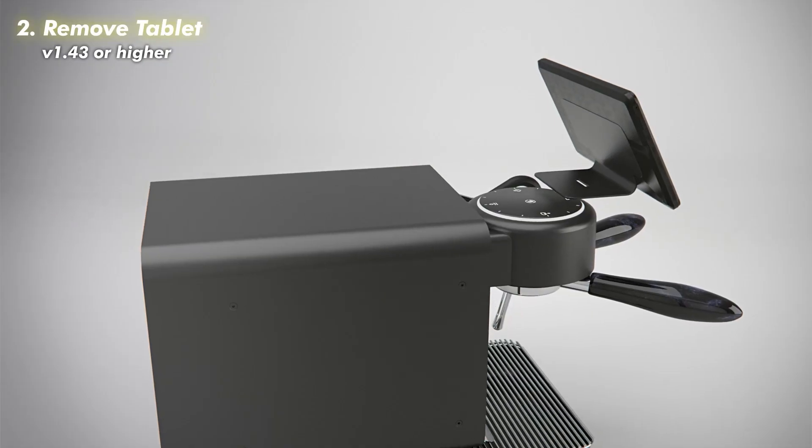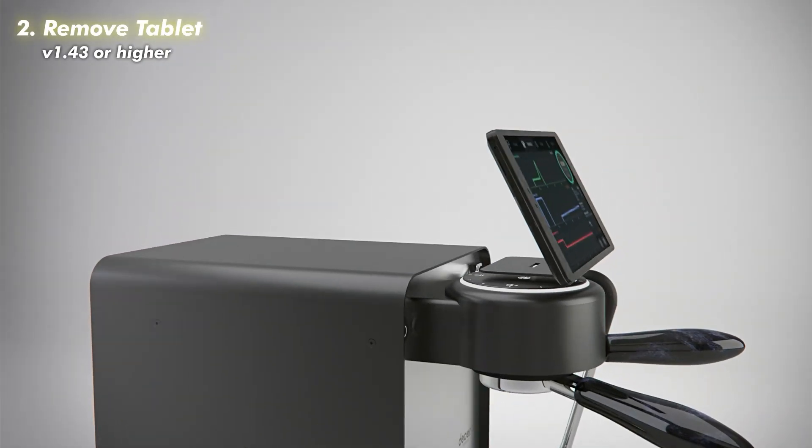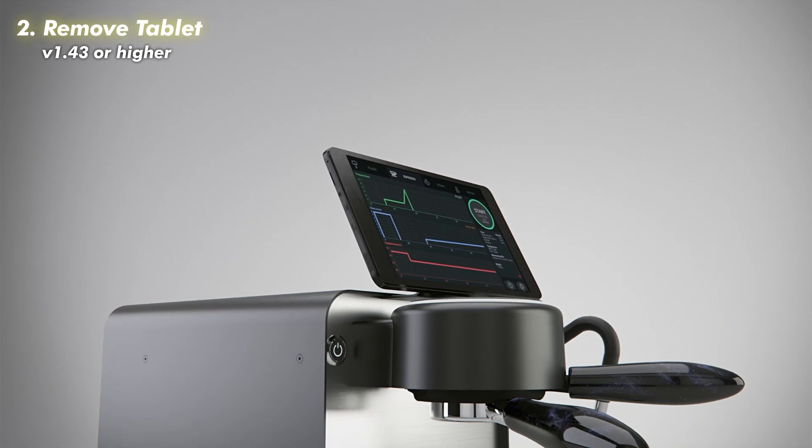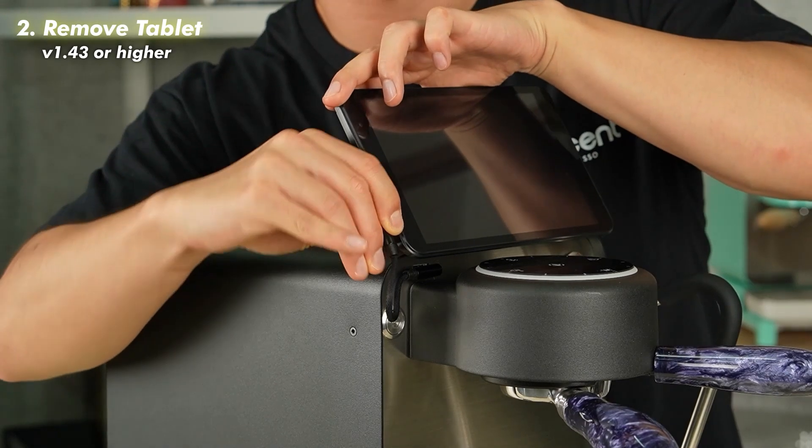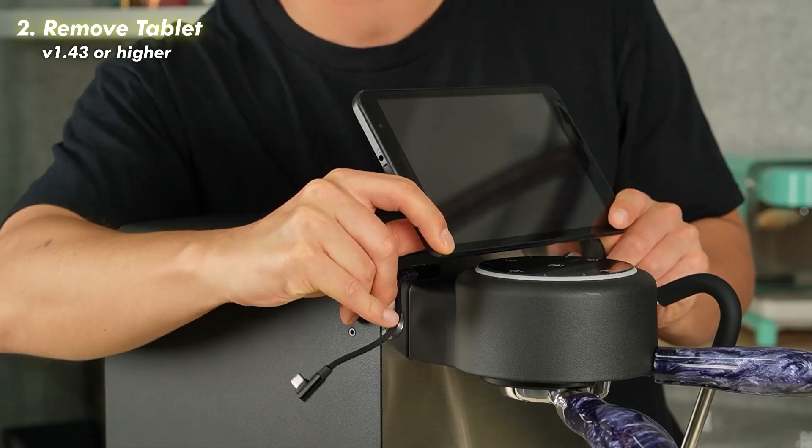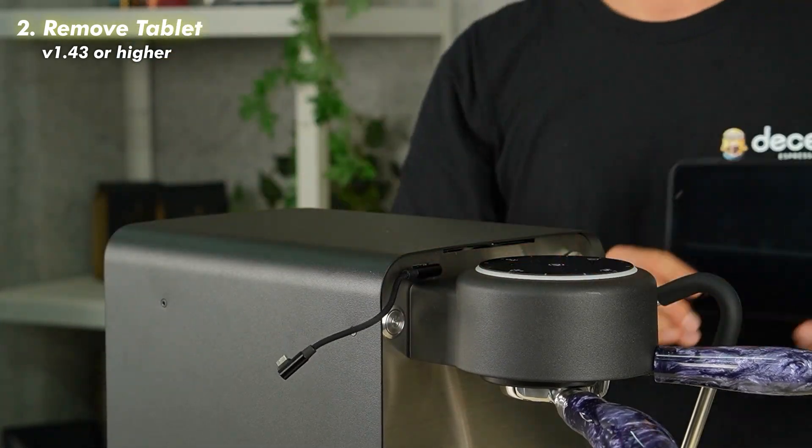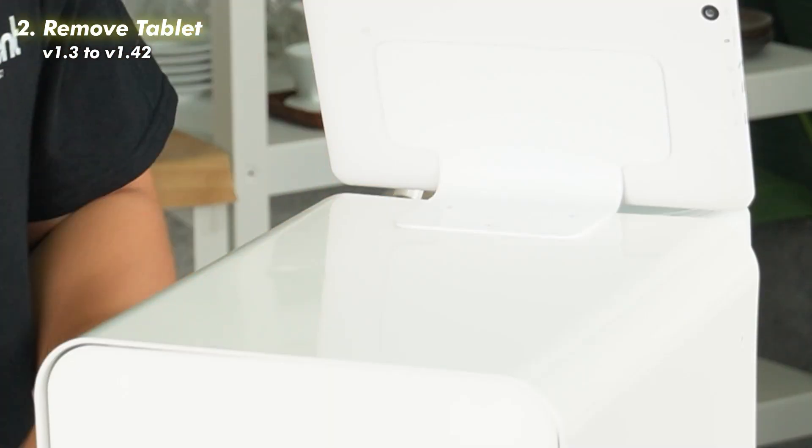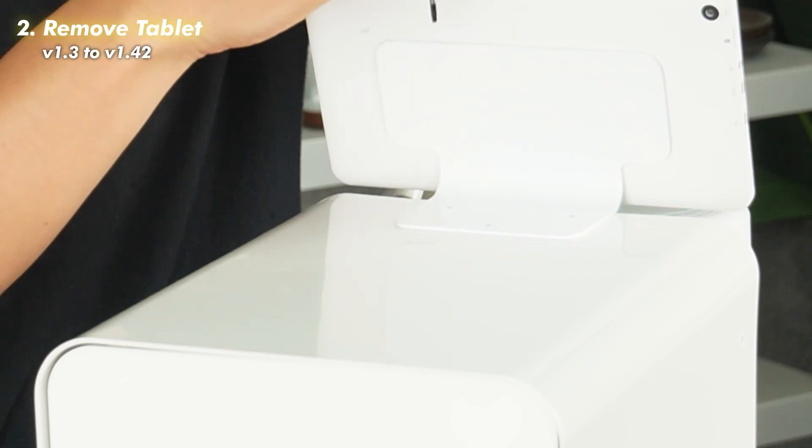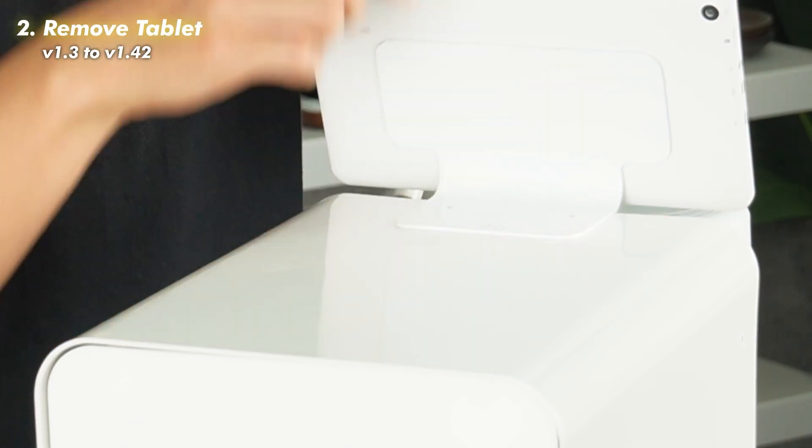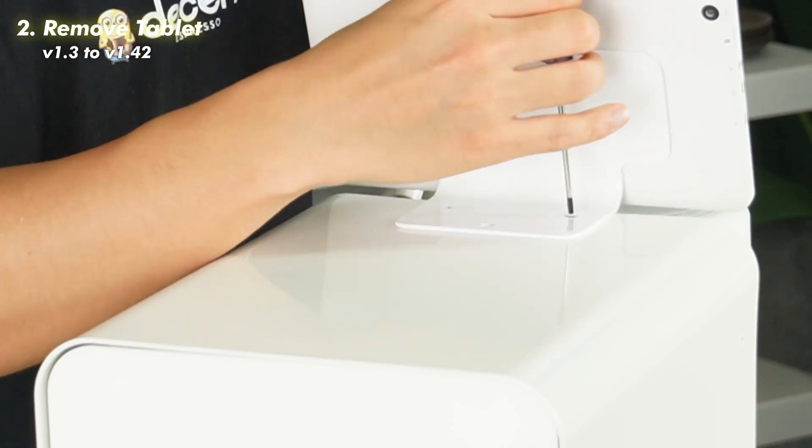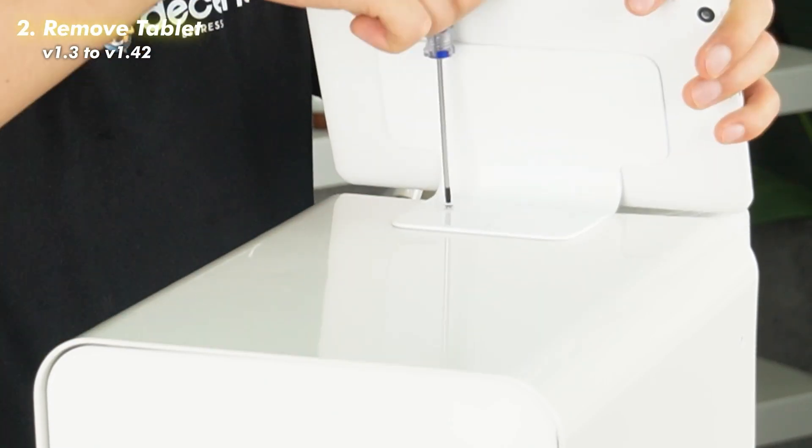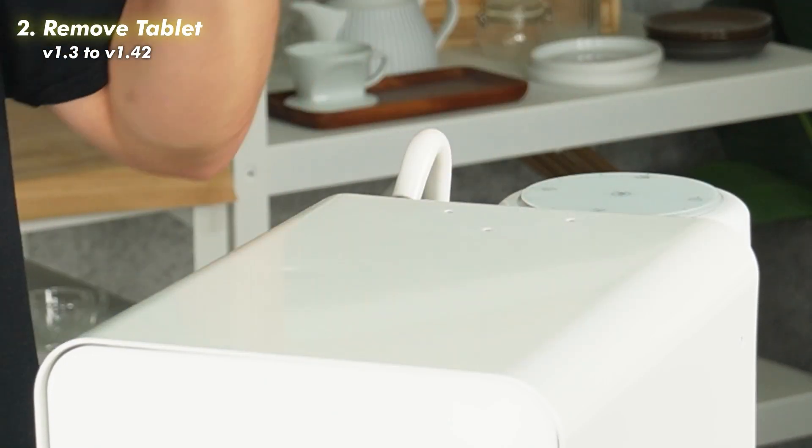For version 1.43 or higher version machines which have the slide type tablet stand, unplug the USB cable and pull the tablet stand out gently. For version 1.3 to version 1.42 machines which have the screw type tablet stand, unscrew the three screws holding the tablet stand and then remove the stand.